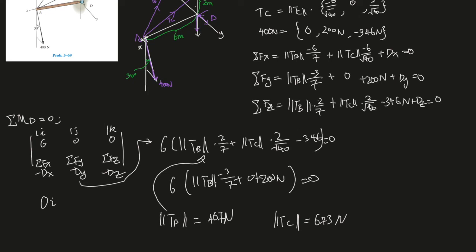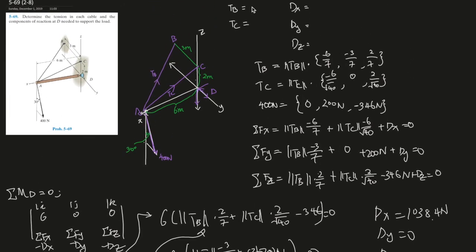If we plug TB and TC into the Fz equation, Dz gives you zero. If we plug everything into the y-equation, Dy also gives you zero. And plugging TB and TC into the x-equation, Dx gives you 1038.4 newtons. Summarizing: TB is 467 newtons, TC is 673 newtons, Dx is 1.04 kilonewtons, and both Dy and Dz are zero newtons.